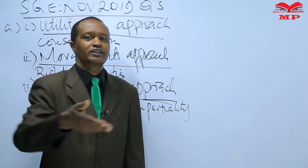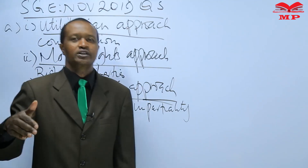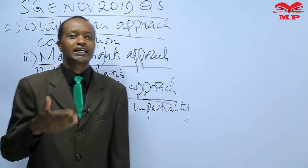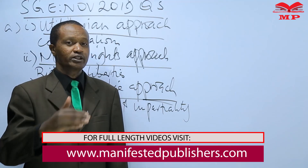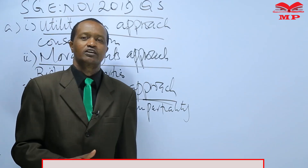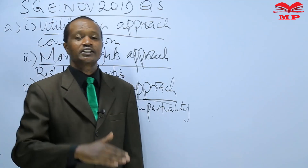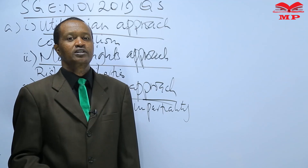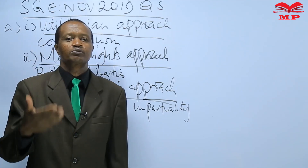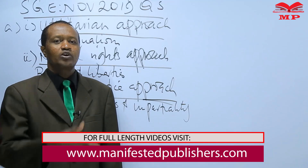Procedural justice requires that rules be administered fairly. The rules should be clearly stated and consistently and impartially enforced. For example, rules relating to leave, promotions, and similar matters should be administered fairly with no favoritism. Compensatory justice argues that individuals should be compensated for the cost of injuries by the party responsible.